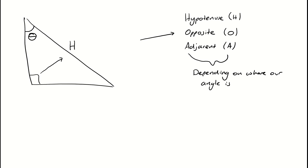My opposite and my adjacent are decided depending on where my angle is. Because my angle is up here at the top, my opposite side is the side that's furthest away from that angle, so that would be this side here. And my adjacent side is the side that is next to my angle, so that's going to be this side here, which we can give the letter A.